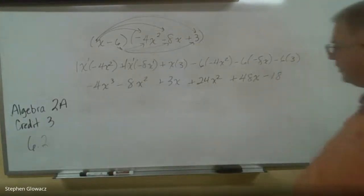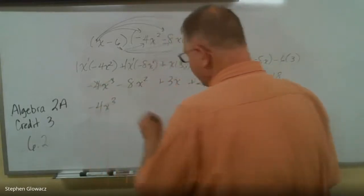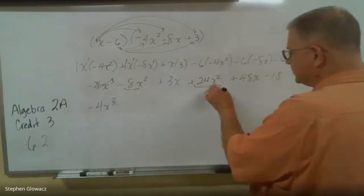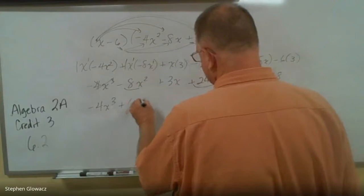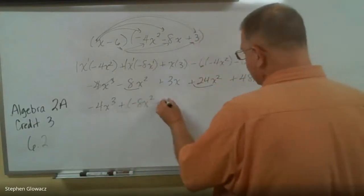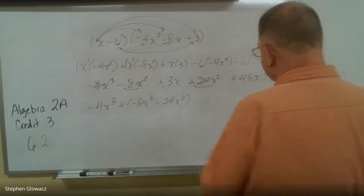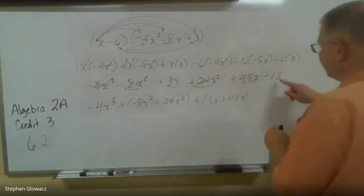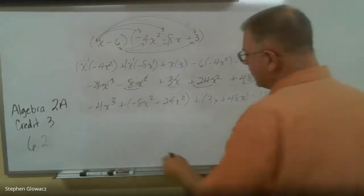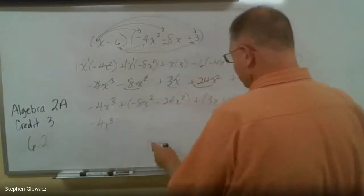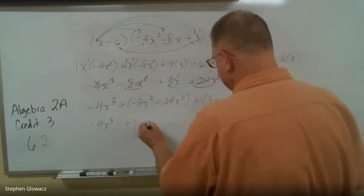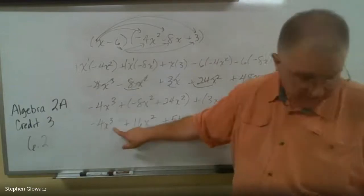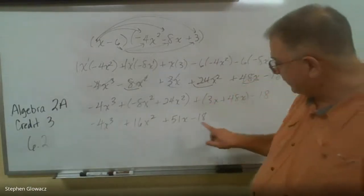Now let's combine like terms. The only x³ term is negative 4x³. For x²: negative 8 plus 24 is positive 16x². For the x's: 3 plus 48 is 51x. And the only constant is negative 18. So the final answer is negative 4x³ + 16x² + 51x - 18, and that checks out.